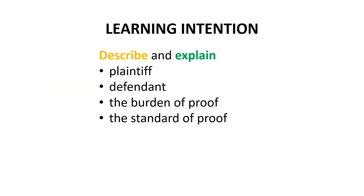That brings us to the end of this video. As a result of watching this video and taking notes, you should be able to describe and explain four key concepts in the Victorian civil justice system: plaintiff, defendant, the burden of proof, and the standard of proof. Don't forget to read the pages from the textbook referred to on the first slide, and if you find any additional useful information, please supplement your Cornell notes with it. Thank you for your attention.